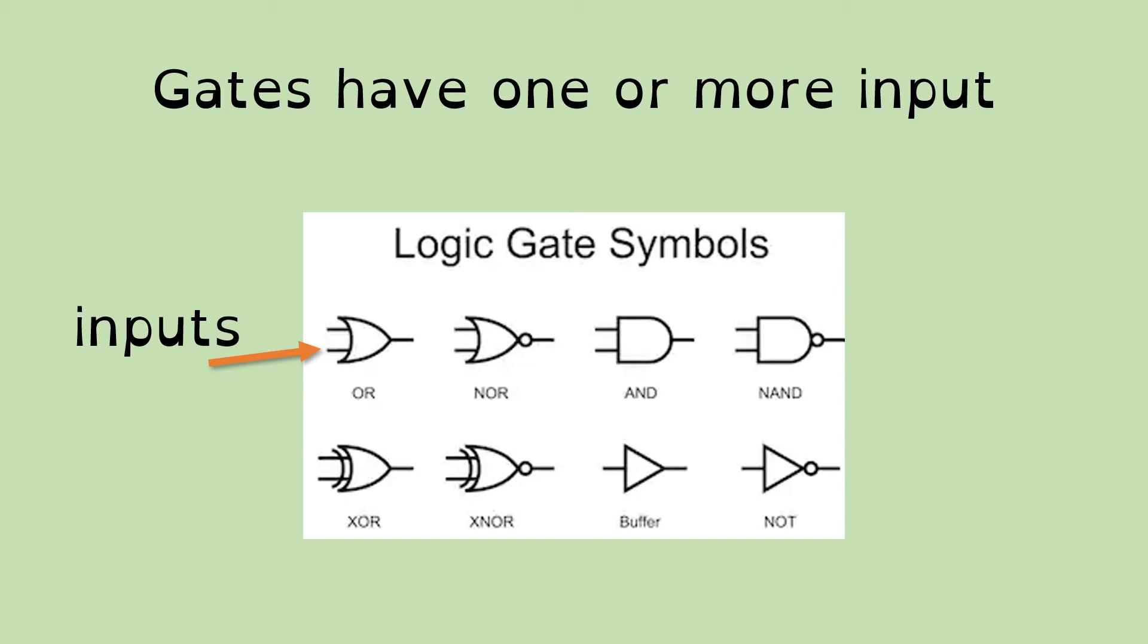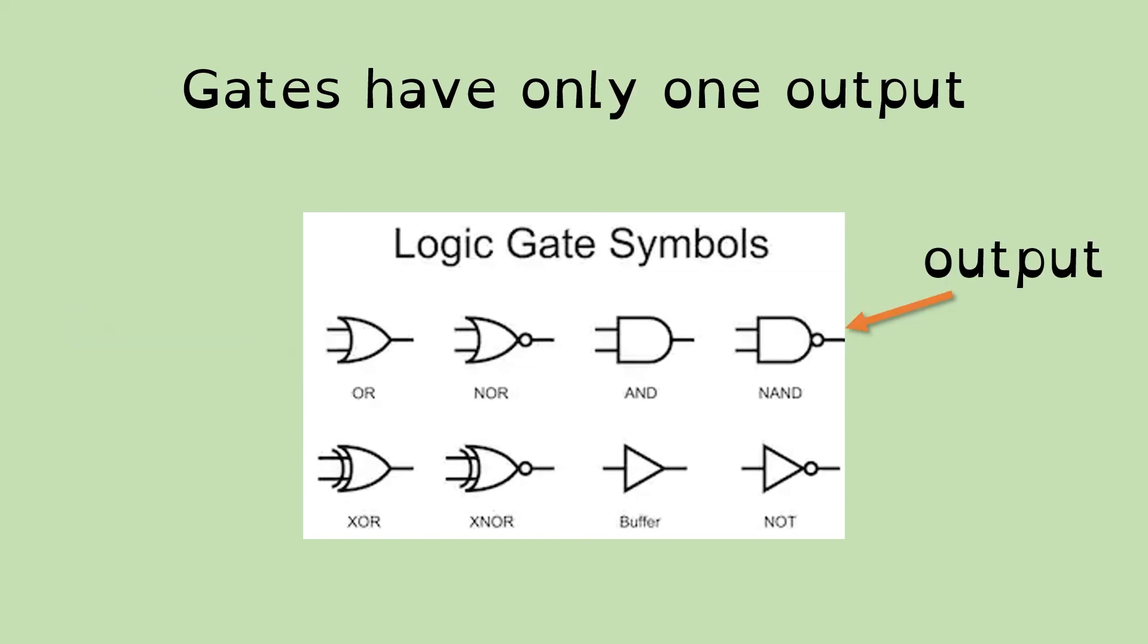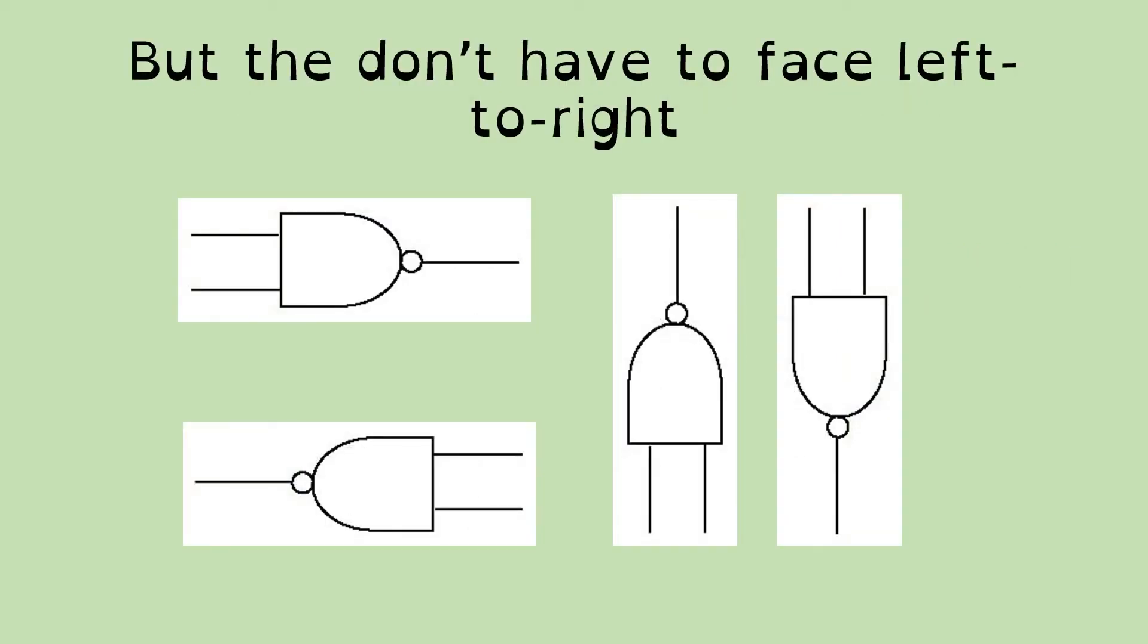They're quite short videos because there's not a lot of explanation that's needed. And each gate has only one output. And this is quite important. You might have more than one input. You've got one output. Basically, you're taking some process and you're producing a result at the output.